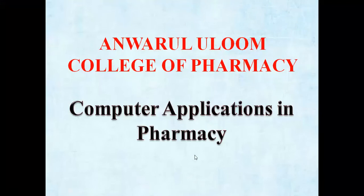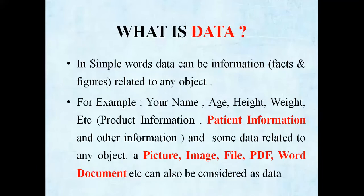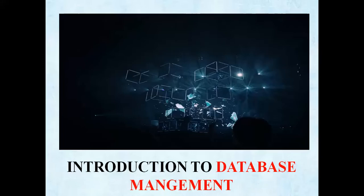Now we go to data and database. In simple words, data means information. Data can be information related to any object — for example, your name, age, height, address. Some data related to any person, like pictures, image files, and word documents, can also be considered as data.